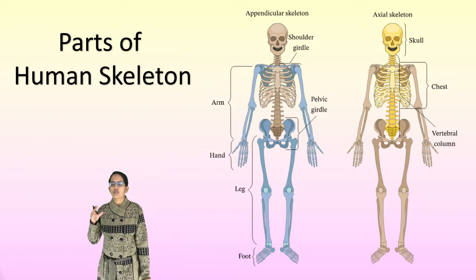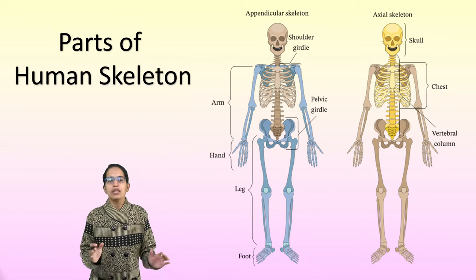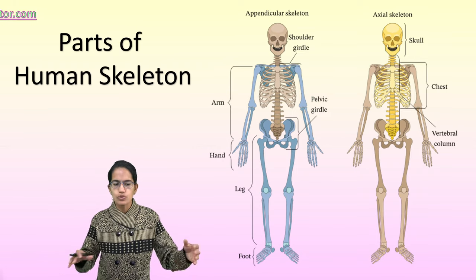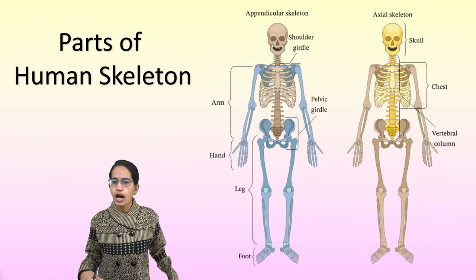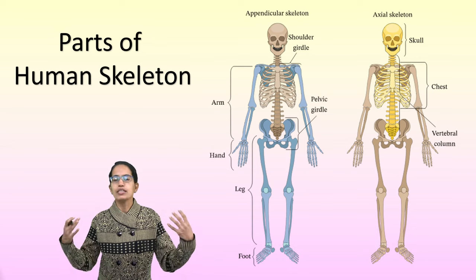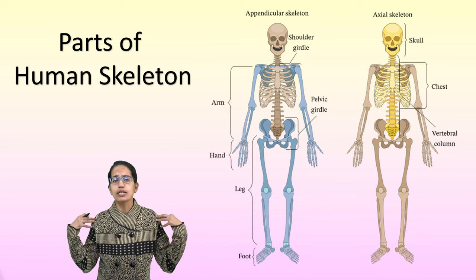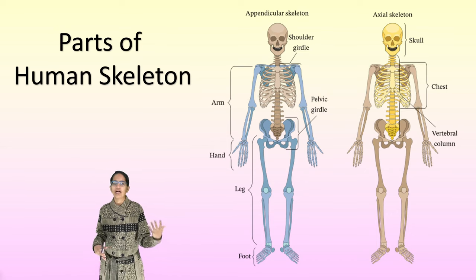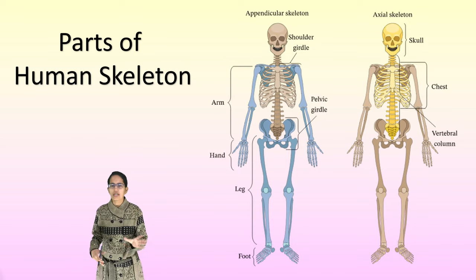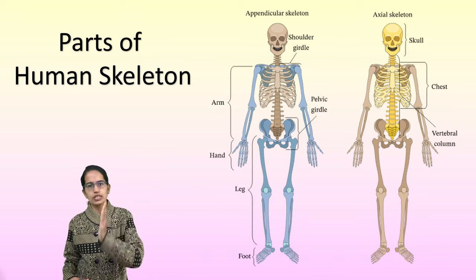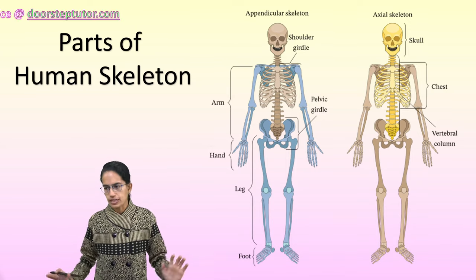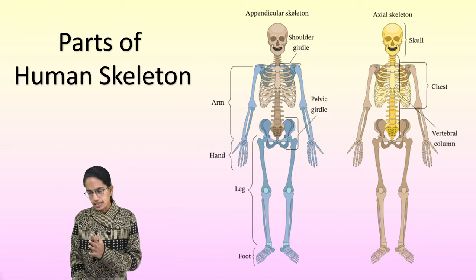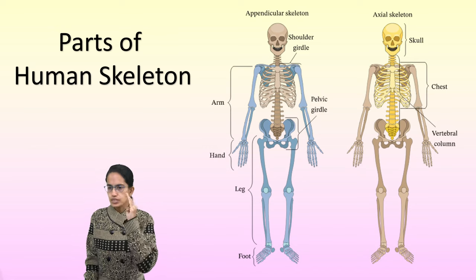The three important parts of the axial skeleton are the skull, thorax, and vertebral column. The appendicular skeleton has the girdles and the limbs — forelimbs and hind limbs — as well as the pectoral girdle and the pelvic girdle, also known as the shoulder girdle and hip girdle.